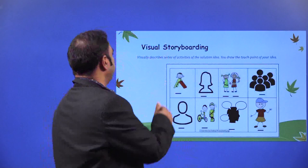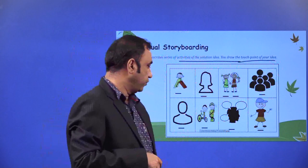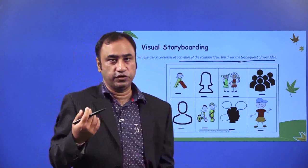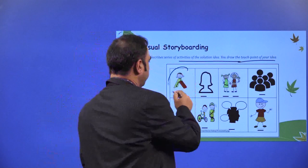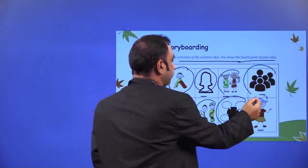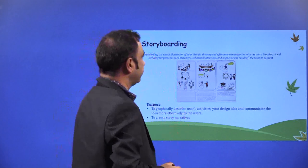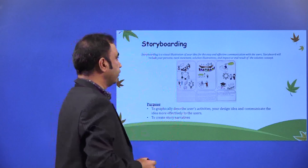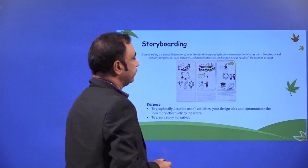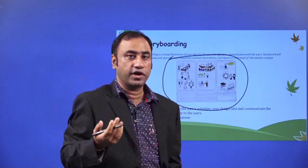Visual storyboarding describes the series of activities or solution ideas visually. You draw the touch points of your idea. What you are doing is creating the story in a visual representation way — you create pictures and express your story in the form of pictures. The visual model explains your stories in a better way that clearly defines in the user's mind what your product or idea is all about. Storyboarding is a visual illustration of your idea for easy and effective communication with the users. A storyboard will include your persona, need statement, solution, illustration, and impact or end result of the solution concept. This is how storyboarding can be created for your own idea and you can launch your product or idea in the storyboarding format.